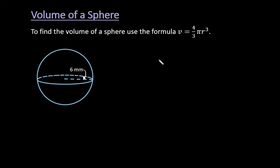Hi, for this video I want to show you how to find the volume of a sphere. In order to find the volume of the sphere, you're going to use the formula volume equals four-thirds pi r cubed, where r is the radius.